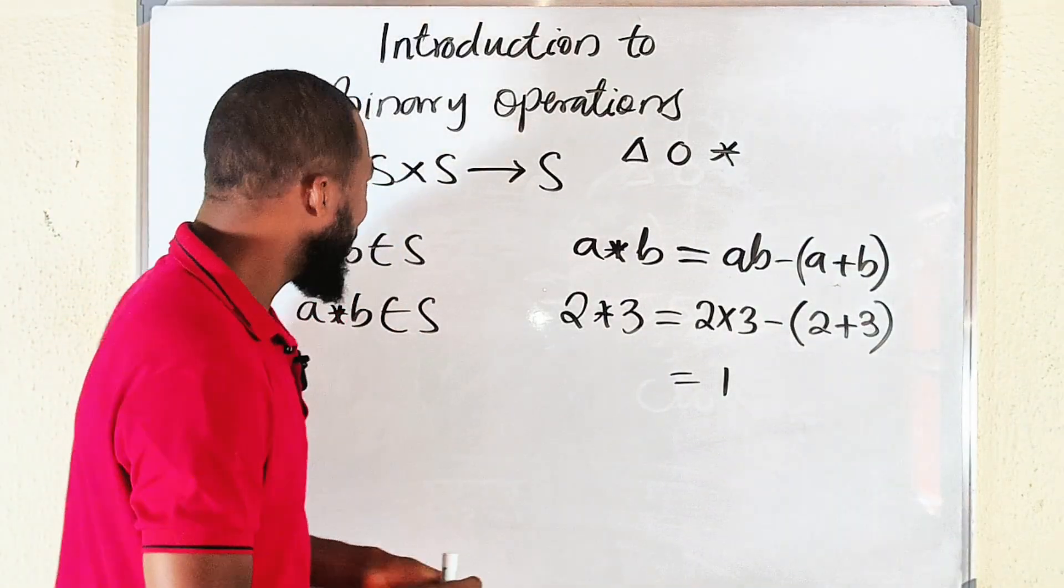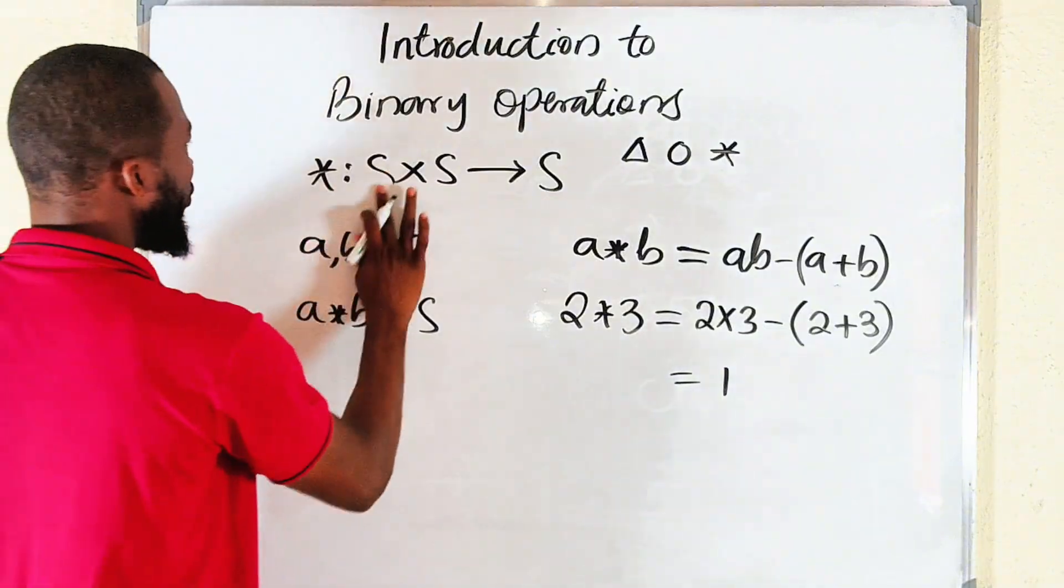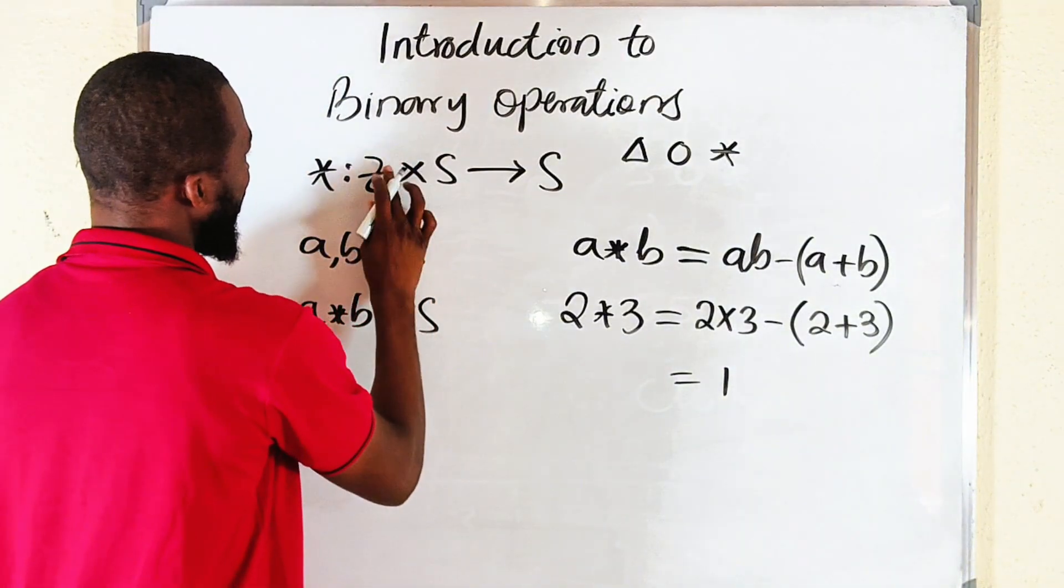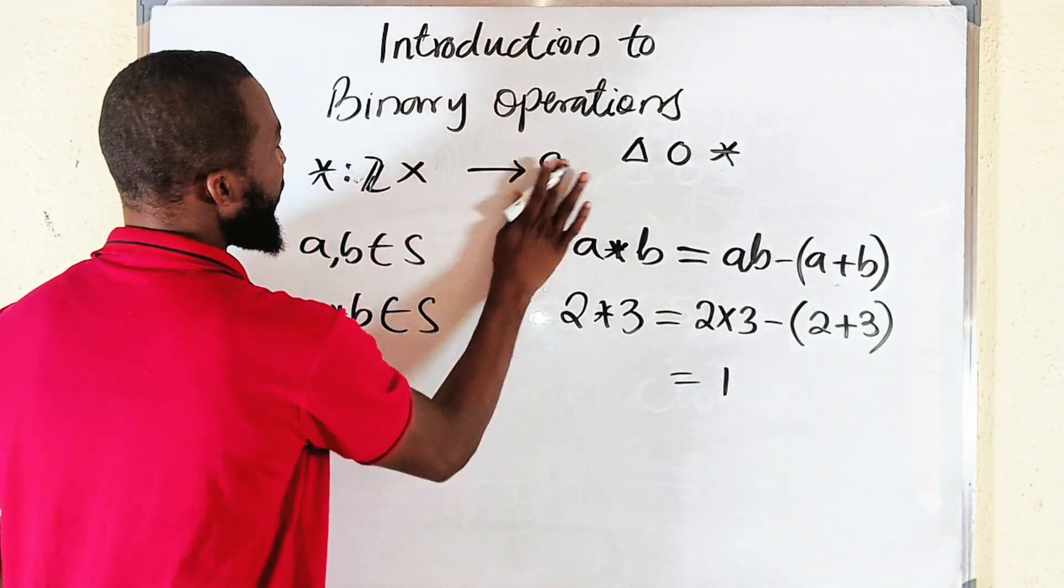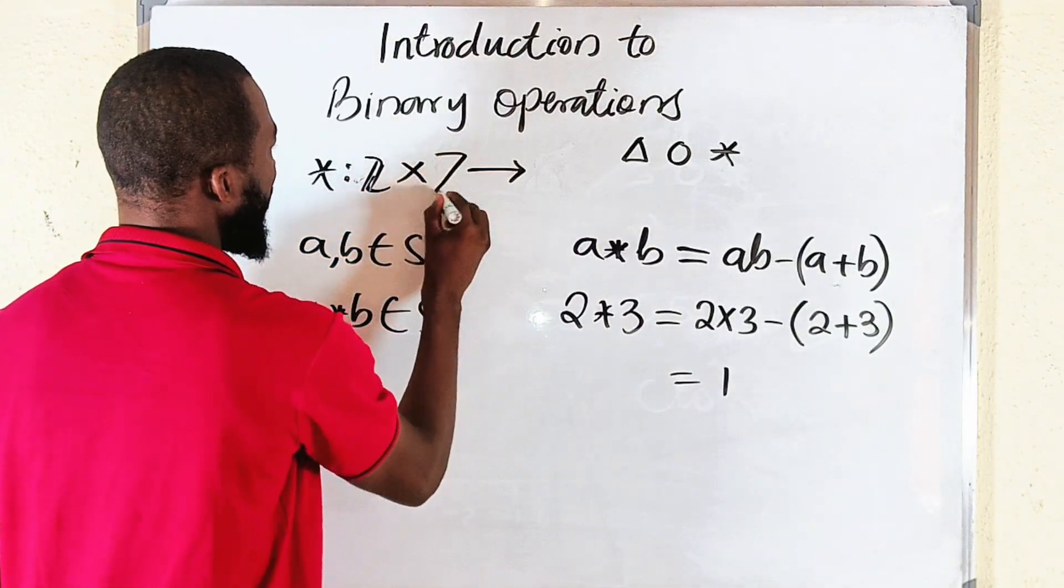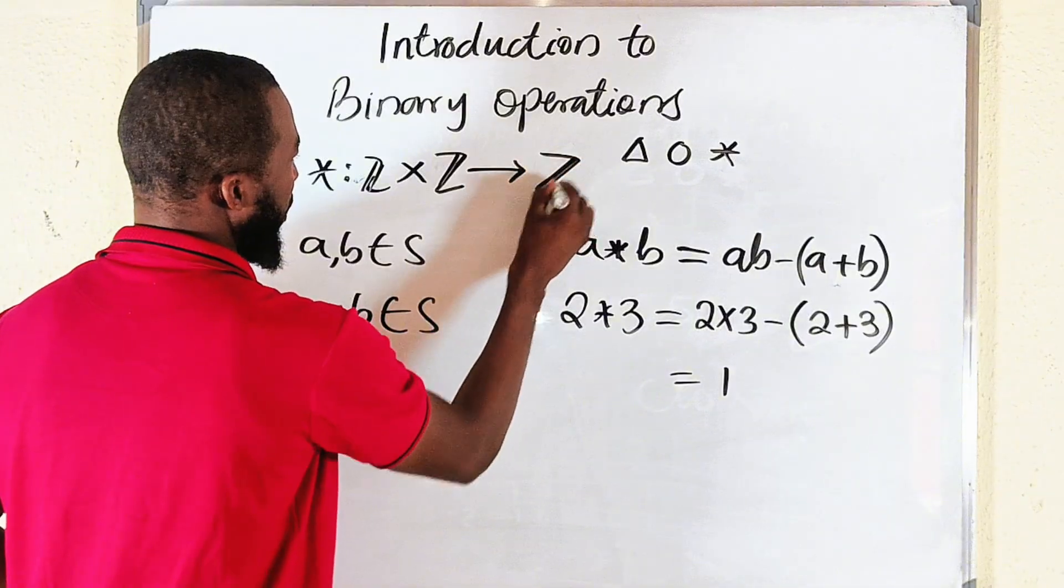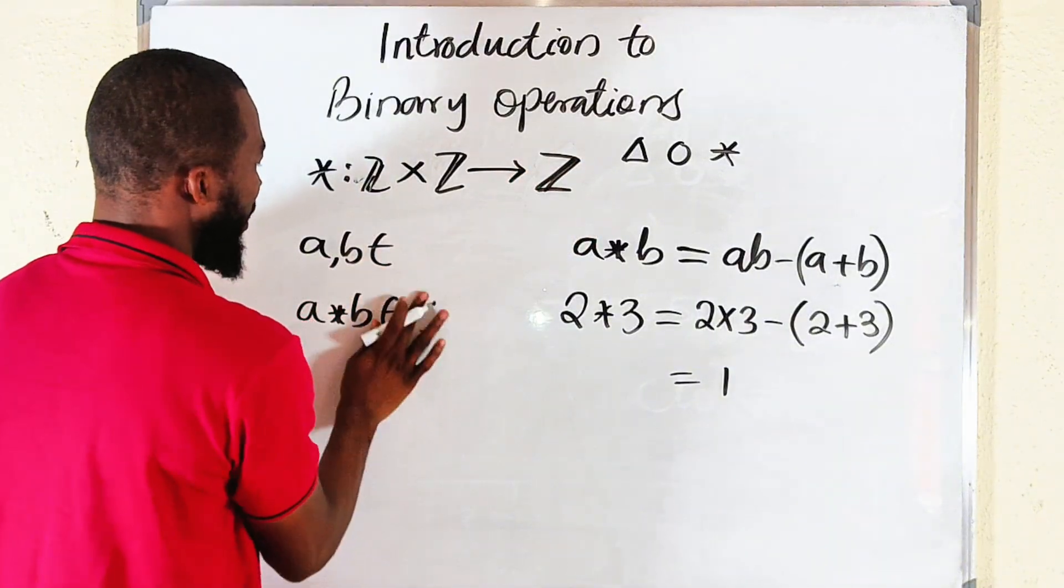2 is an integer, 3 is an integer, 1 is also an integer. Suppose S here is also a subset of integers. This is an integer. For example, you may even change it like this: if this is an integer, this and this should also be integers.